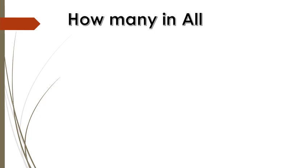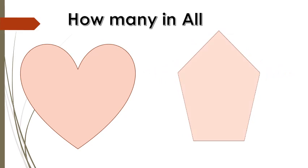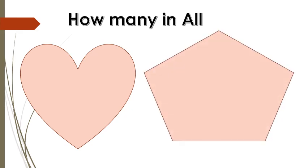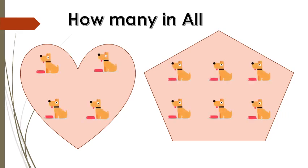Let's move to another example. How many in all? Here there are two boxes, a heart shape box and pentagon shape box. In these boxes, number of dogs are here. Can we count? Let's count the number of dogs in heart shape box: 1, 2, 3, 4. Now move to pentagon shape box: 5, 6, 7, 8, 9, 10. So there are 10 dogs in total. How many in all? 10, 10 dogs.